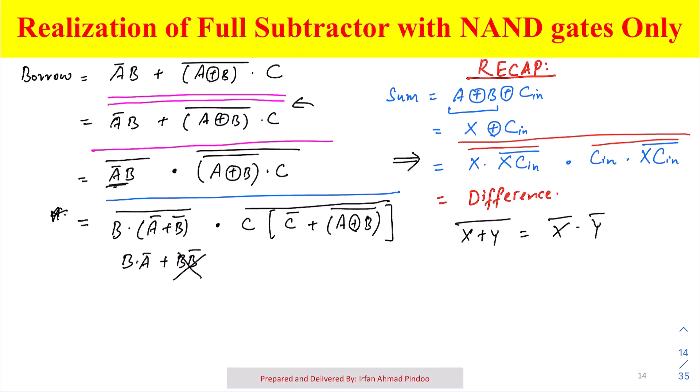Similarly, if you realize what is happening in the second term, the first dot product is C into C bar, which is again zero. So it should not affect our equation, and the next term will be C into A XOR B bar, which is same as what is available here.